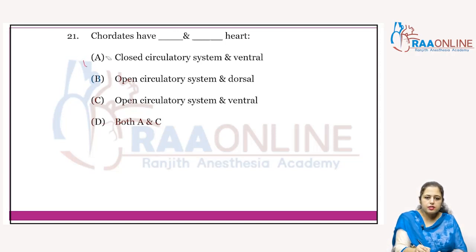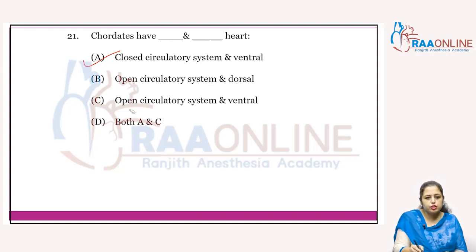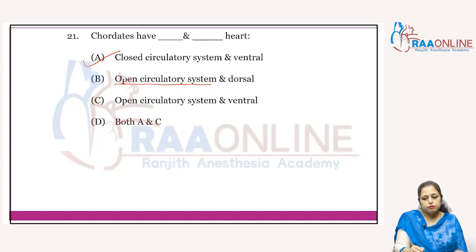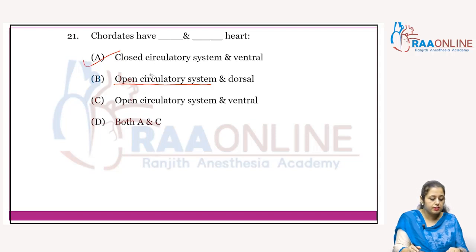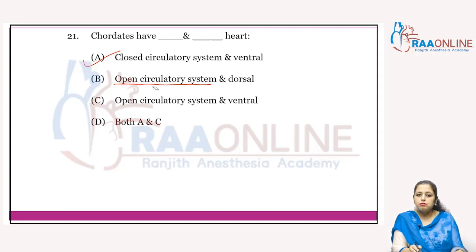Chordates have a closed circulatory system with a ventral heart — answer is A. In open circulatory systems, blood does not remain confined to blood vessels — present in insects. In closed circulatory systems, blood remains confined within blood vessels. In insects, there is a hemocoel in which the colorless fluid hemolymph is present.